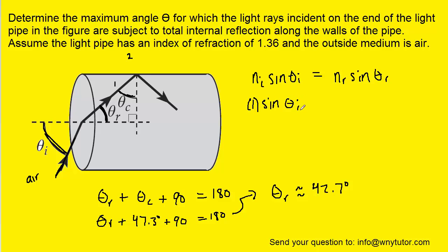We don't know theta_i, so we're just going to keep that as our unknown. The index of refraction of the material was given to us again as 1.36, and then we just figured out the theta_r is 42.7 degrees.